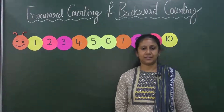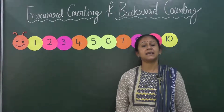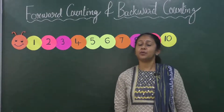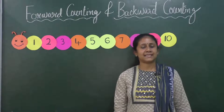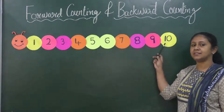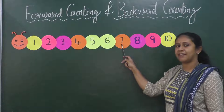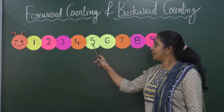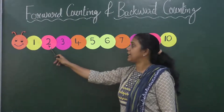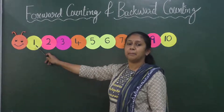Now let's understand what is backward counting. Backward counting is when you count the numbers in reverse order, that is from 10 to 1. Let's count: 10, 9, 8, 7, 6, 5, 4, 3, 2, 1. This is backward counting.